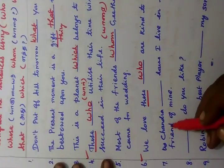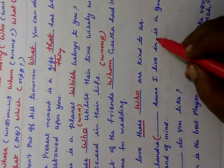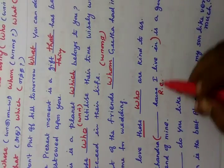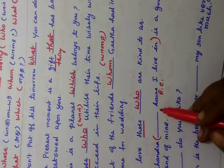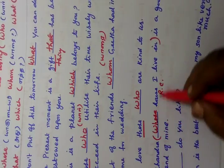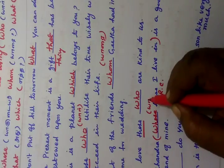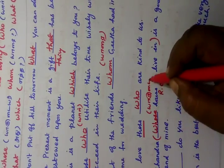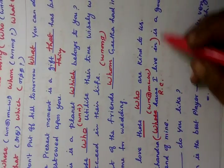Now you see the seventh one. 'Chandra, whose house I live in, is a good friend of mine.' He is a good friend of mine. So Chandra is a good friend of mine — the answer is 'whose', as in 'whose house'.